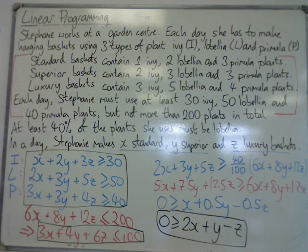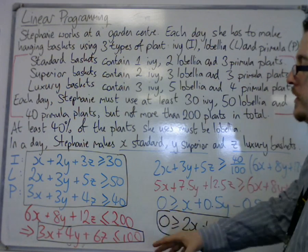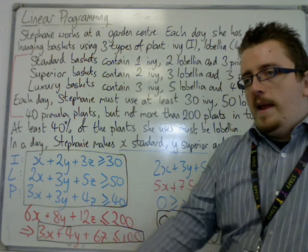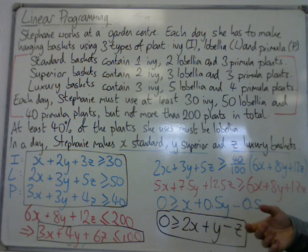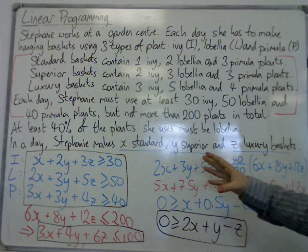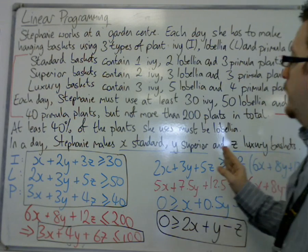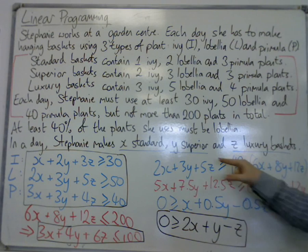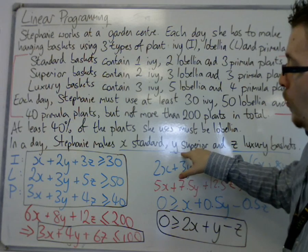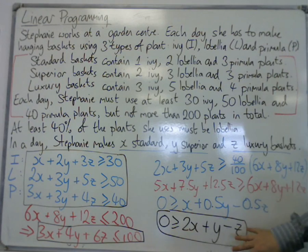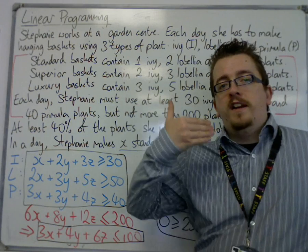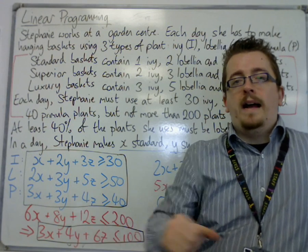In most cases from then on, we won't be able to draw these inequalities because they have three variables — this will be a linear programming problem in three dimensions. However, they may say something like: on a particular day, Stephanie makes the same number of superior baskets as luxury baskets. If that's the case, then y equals z, and you can substitute all z's with y. That turns it into a two-dimensional problem with just x's and y's, and from there you would be able to graph this linear programming problem and solve it.